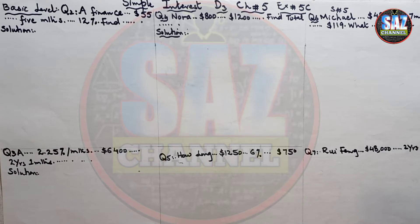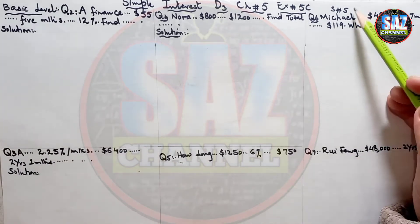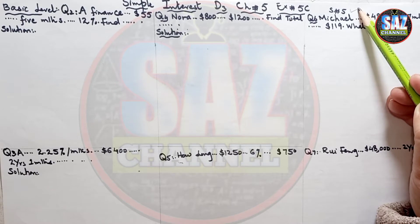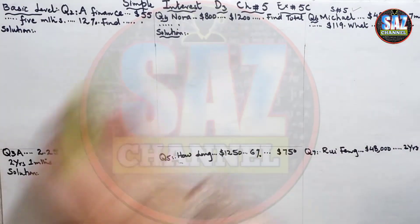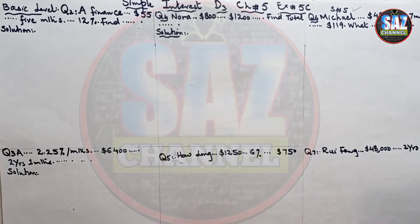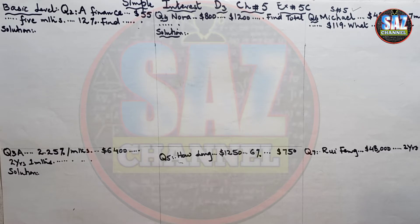Hello and welcome to Maths by Saas. This is my fifth lesson of D3, chapter number 5, exercise 5C. The exercise is about simple and compound interest. If you find any difficulty understanding how to calculate simple interest, the formula for interest, or how to find the different components of this formula, you have to watch my previous lesson, for which I will give the link in the description box.